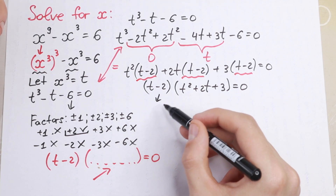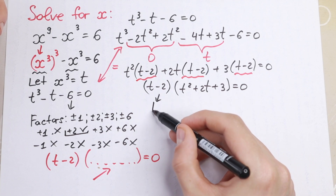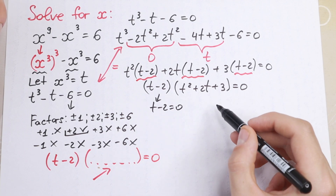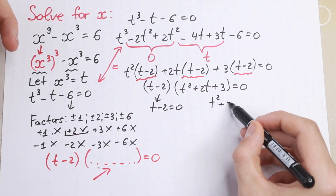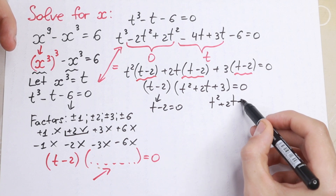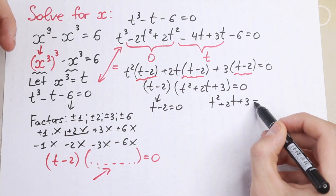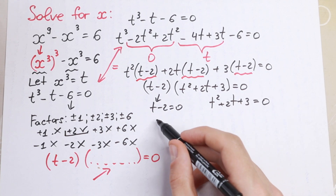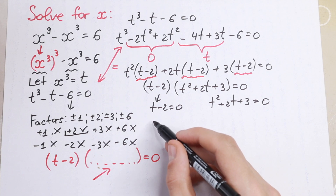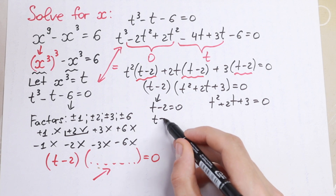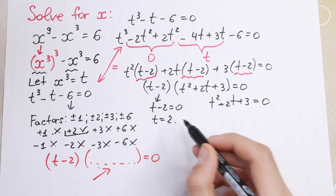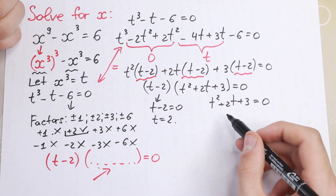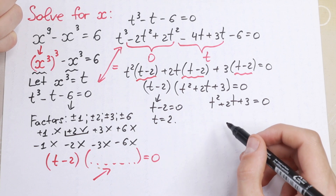Since the product equals zero, either t minus 2 equals zero, giving t equals 2, or t squared plus 2t plus 3 equals zero. From the first case, t equals 2. And from the second case, we can find t as well.